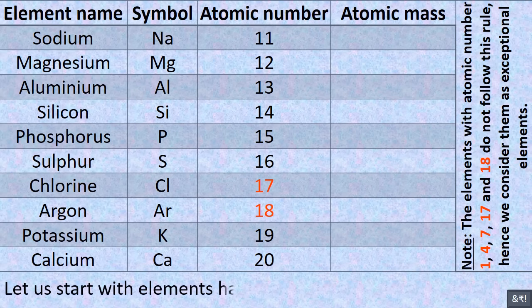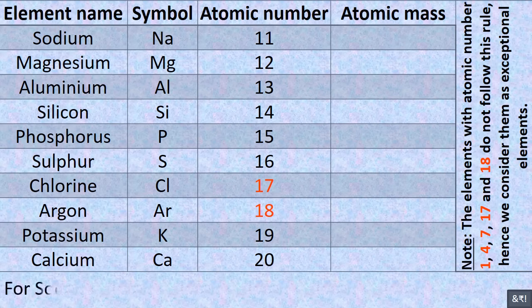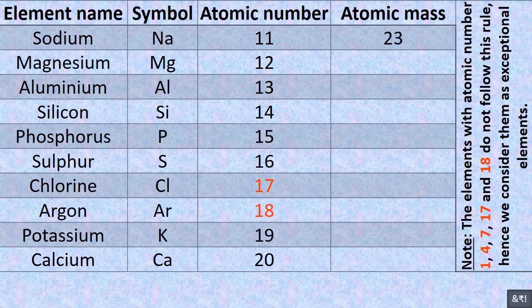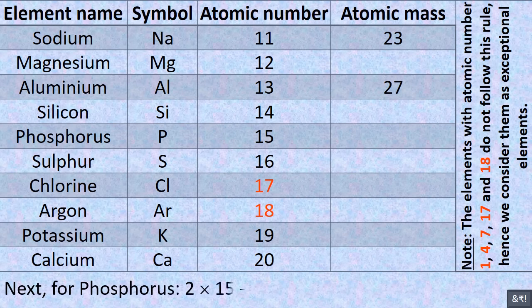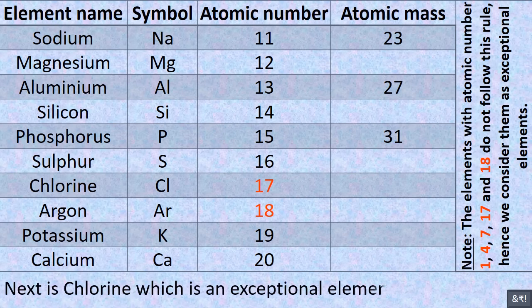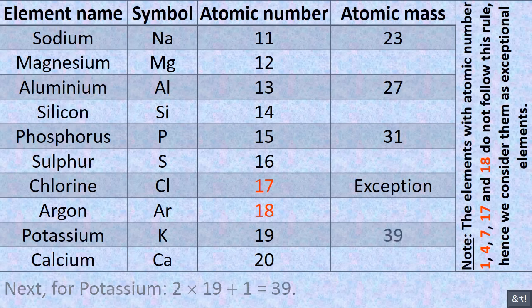Now the next 10 elements. Starting with elements having odd atomic number. The first element with odd atomic number is sodium: 2 multiplied by 11 plus 1 equals 23. For aluminium: 2 multiplied by 13 plus 1 equals 27. For phosphorus: 2 multiplied by 15 plus 1 equals 31. Chlorine is an exceptional element to this rule. For potassium: 2 multiplied by 19 plus 1 equals 39.